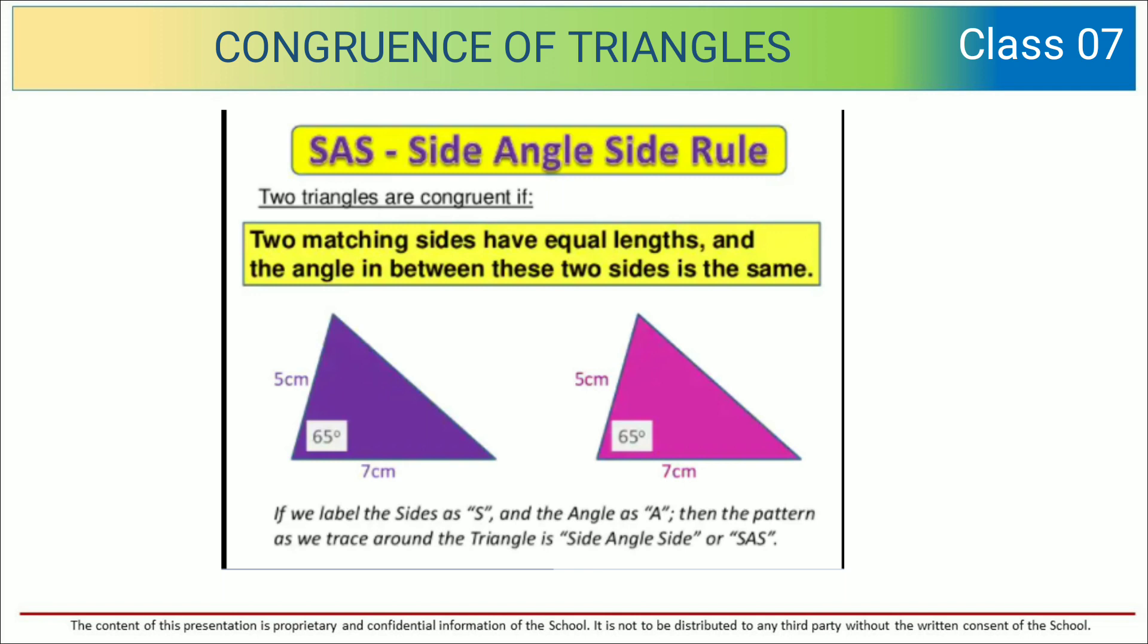You can see one triangle with violet color, another with pink color. Looking at the labels, we can clearly say that both triangles are congruent by SAS test. That is side-angle-side.